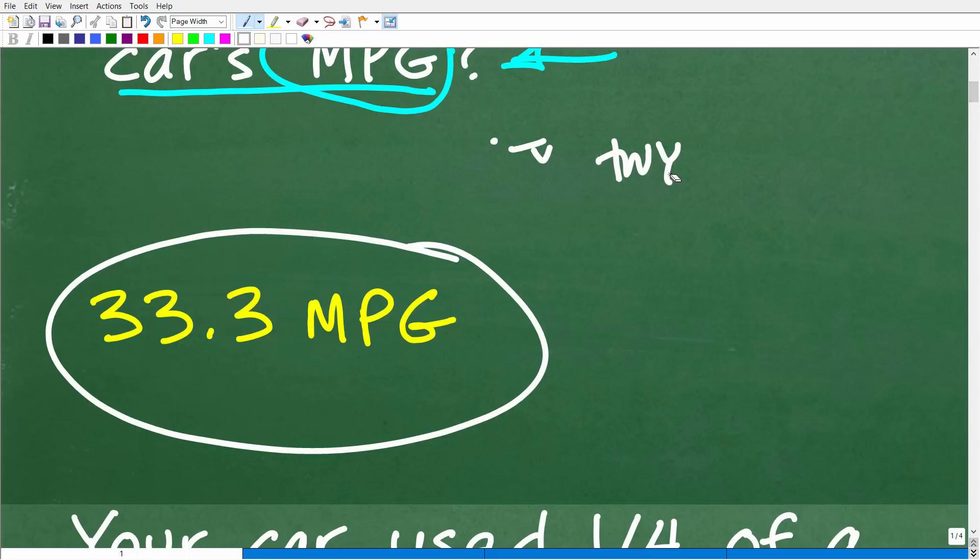But anyways, if you got 33.3, something right around there, well, then that indicates to me that you got this problem right.